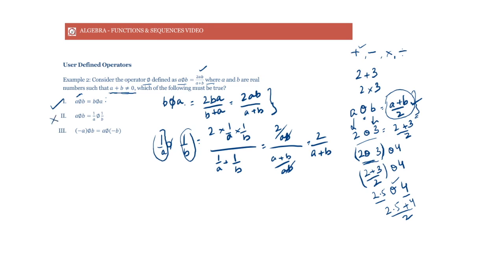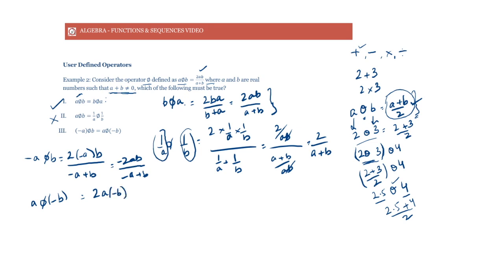Let's check: is (−a) φ b equal to a φ (−b)? For (−a) φ b: substitute −a for a, giving 2(−a)b / (−a + b) = −2ab / (b − a). For a φ (−b): substitute −b for b, giving 2a(−b) / (a − b) = −2ab / (a − b). The numerators are both −2ab, but the denominators (b − a) and (a − b) are not the same. So these two are also not equal.